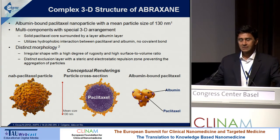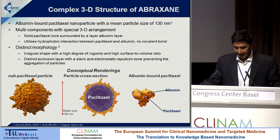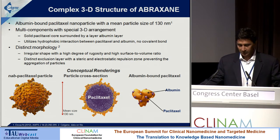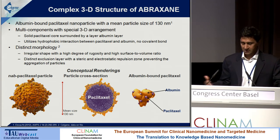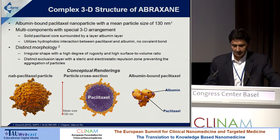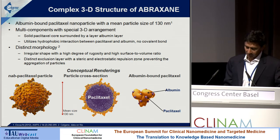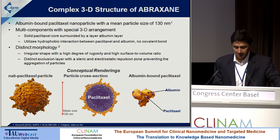The key feature of this is that it's a complex 3D structure, as you can imagine for a nanoparticle, and it has a solid core which contains the paclitaxel, surrounded by a coating of albumin, which is cross-linked into different oligomeric forms because of the specific process used to create it, and it has a distinct morphology with a high degree of rugosity and high surface-to-volume ratio. Ultimately this particle ends up as individual albumin-bound paclitaxel molecules in the circulation.